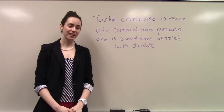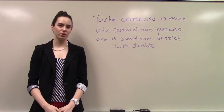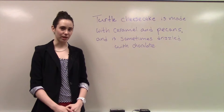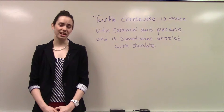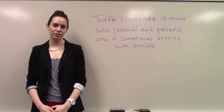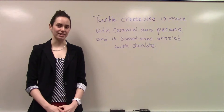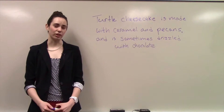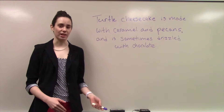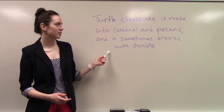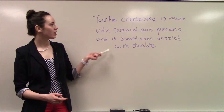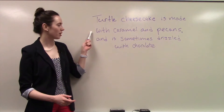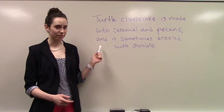When fixing a comma splice, be sure that what you're looking at is actually two independent clauses. A lot of times students confuse independent and dependent clauses because they don't necessarily look at both subject and predicate. Take this for example: turtle cheesecake is made with caramel and pecans and is sometimes drizzled with chocolate.